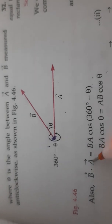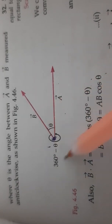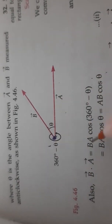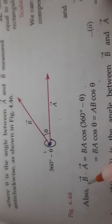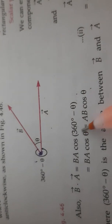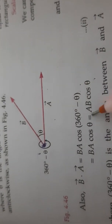So B vector dot A vector, B A cos(360° - θ). And we know that B A cos(360° - θ) will give us cos θ.